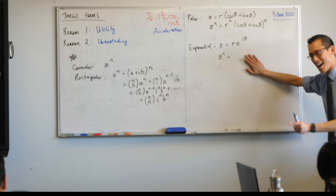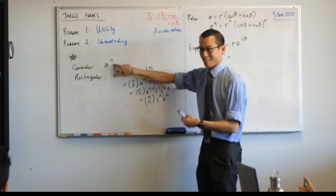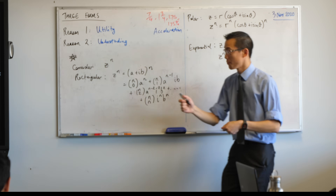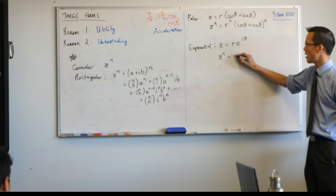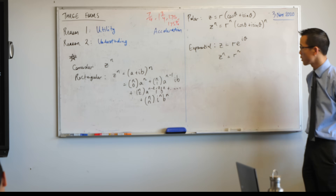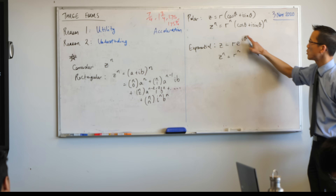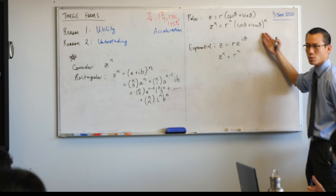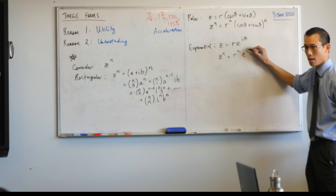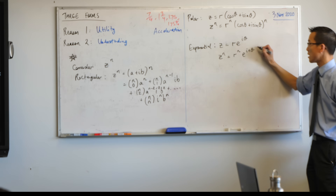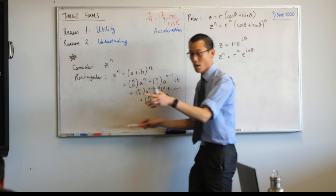When we come to exponential form — and we shouldn't be that surprised because it's a form named after what we're doing right now, exponentiation — you end up with something a little more useful. You get the same r to the n out the front, but then because this is in index form, when you raise something to the power of n you multiply those indices together, so I could write it as e to the power of i·nθ.